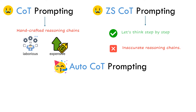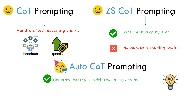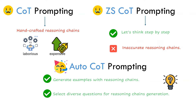Auto-COT prompting addresses the issues with both COT prompting and zero-shot COT prompting by automatically generating reasoning chains. You may ask: are not automatically generated reasoning chains inaccurate sometimes? Auto-COT prompting addresses this issue by selecting diversified questions for reasoning chain generation. Once the reasoning chains are generated, Auto-COT uses these diversified questions along with automatically generated chains as examples, similar to COT prompting.